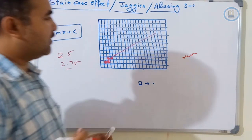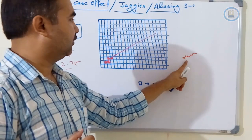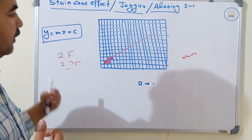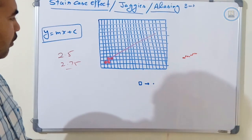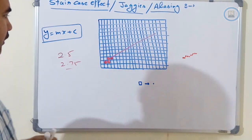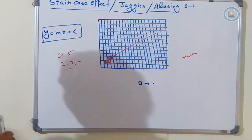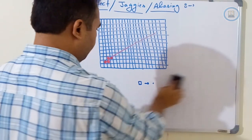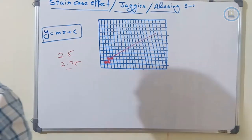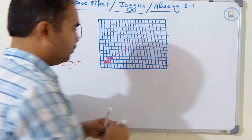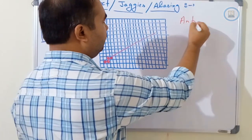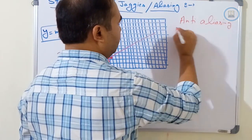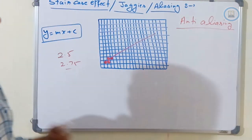This stepped output is called the jaggy's effect or aliasing effect, and it is generated during the rasterization process when converting vector images to raster images. This problem can be rectified using two processes: the post-filtration method and the pre-filtration method, also called the anti-aliasing effect.